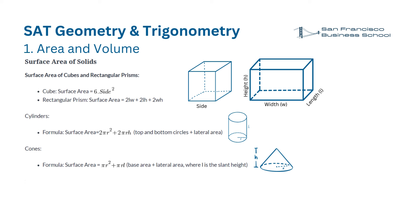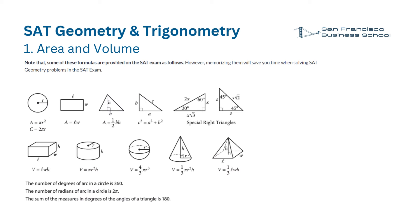For cones, the surface area equals base area plus lateral area, where L is the slant height. Spheres: Surface area equals 4 times π times R squared. Note that some of these formulas are provided on the SAT exam; however, memorizing them will save you time when solving SAT geometry problems.